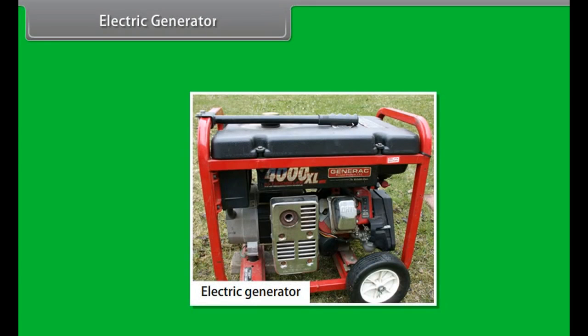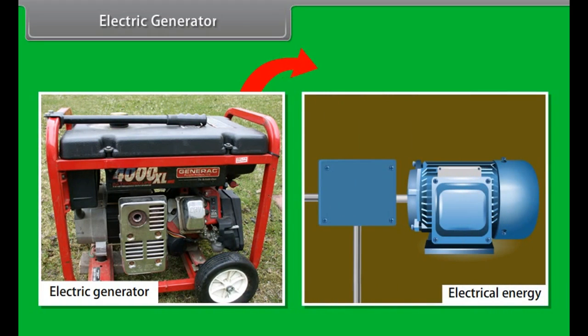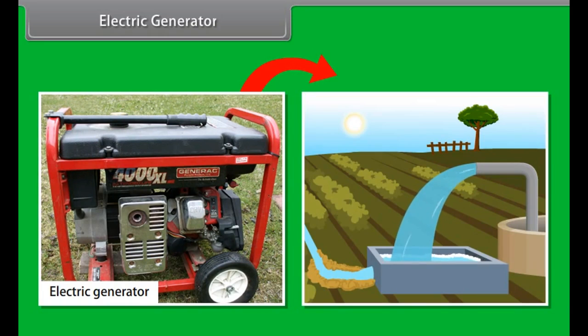Electric generator. An electric generator converts mechanical energy to electrical energy. It forces electrical charge to flow through an external electrical circuit. Examples include a water pump which causes water to flow but do not create water. Electric generators operate based on electromagnetic induction, that is, whenever a conductor moves to a magnetic field, a current is induced in this conductor.